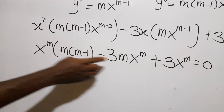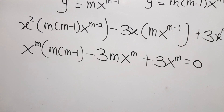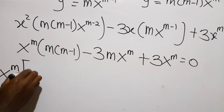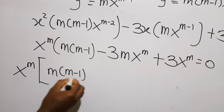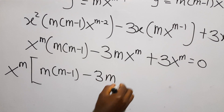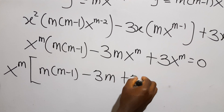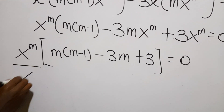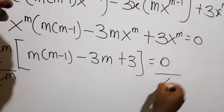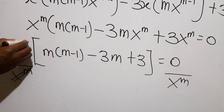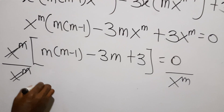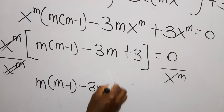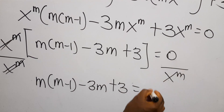x^m is common to all terms, so we factor it out: x^m times [m(m−1) minus 3m plus 3] equals 0. Dividing both sides by x^m, we are left with m(m−1) minus 3m plus 3 equals 0.